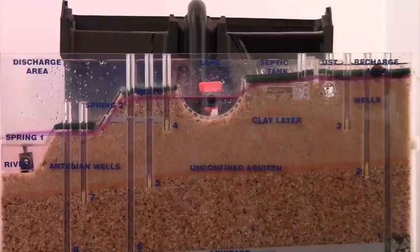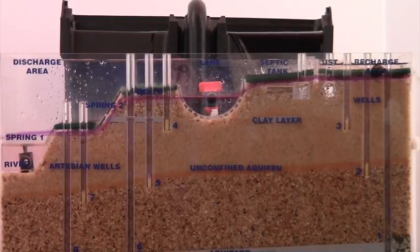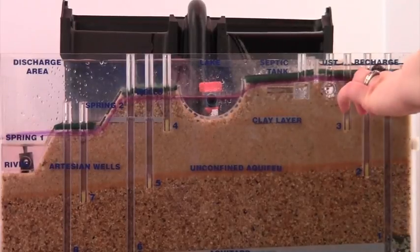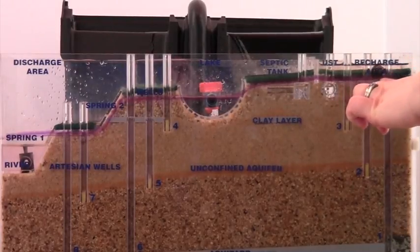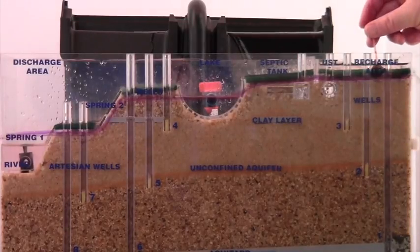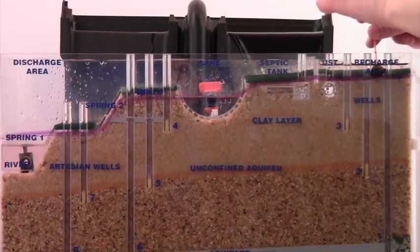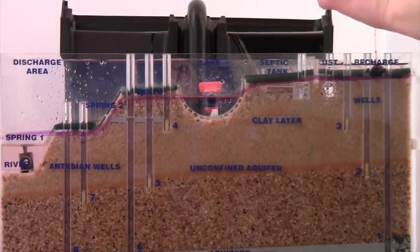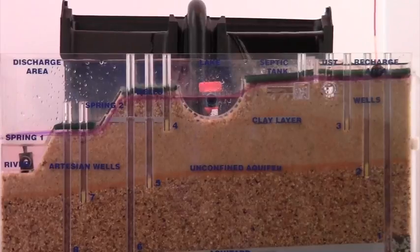So now we're going to add some dye at the location of the slag heap and see where that contamination moves in our model of a groundwater system.